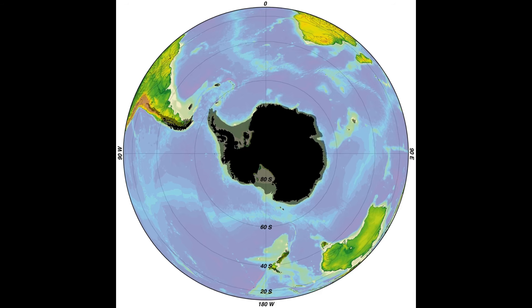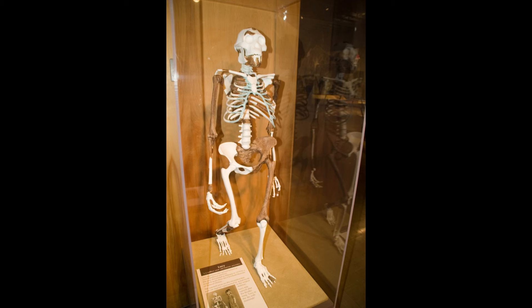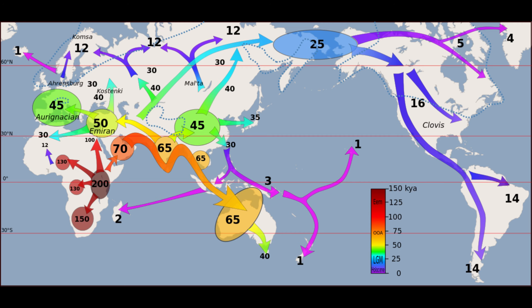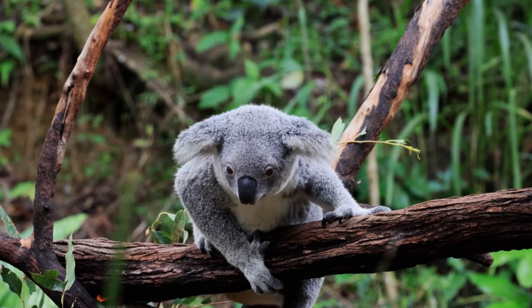The Quaternary period is also significant for the evolution and spread of modern humans. Homo sapiens emerged in Africa around 300,000 years ago and spread across the globe. The development of advanced tools, control of fire and complex social structures allowed humans to adapt to a wide range of environments. Human activity has had a profound impact on mammalian evolution, leading to the domestication of animals, habitat alteration and more recently the extinction of many species.